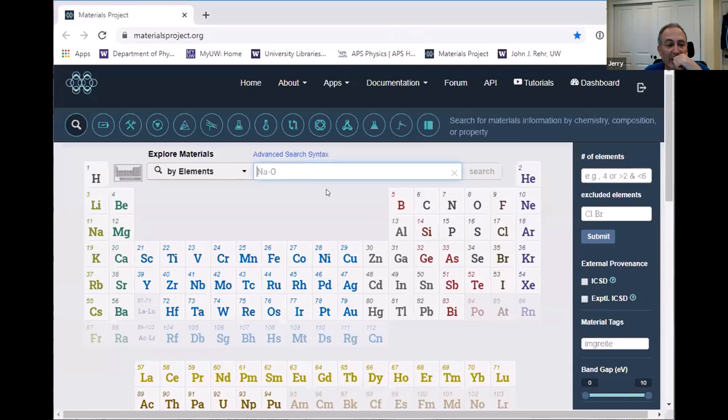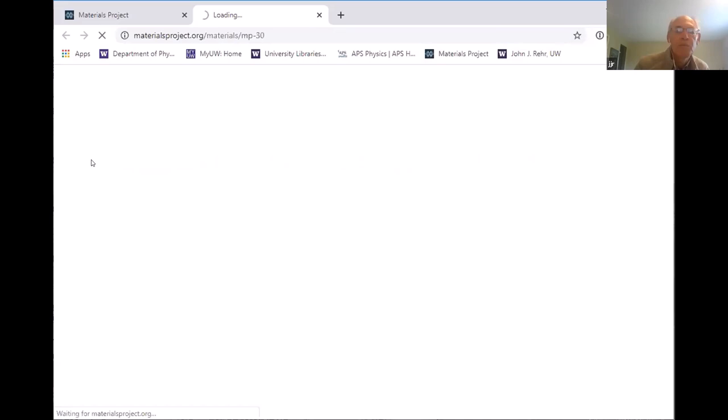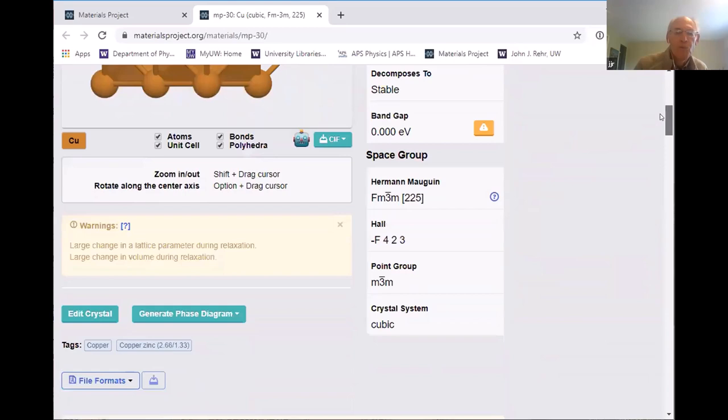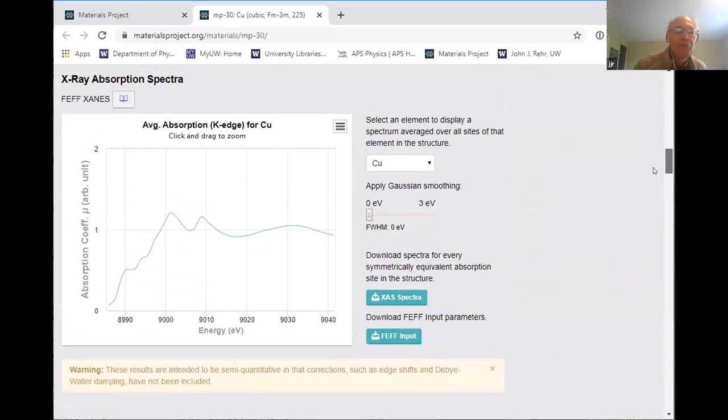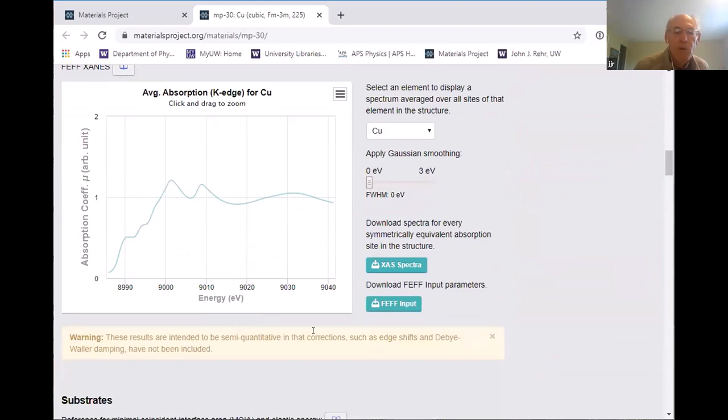Okay, so I've gone to the main screen in the materials project. And we'll click on some material that we want. Our guinea pig in FEFF is always copper. So we'll search on copper. And I like MP30, which is the standard FCC copper spectrum. And bingo. We see a list of all the properties you ever wanted to know.